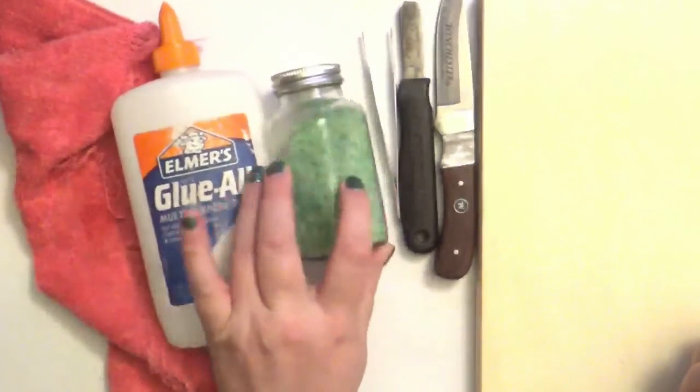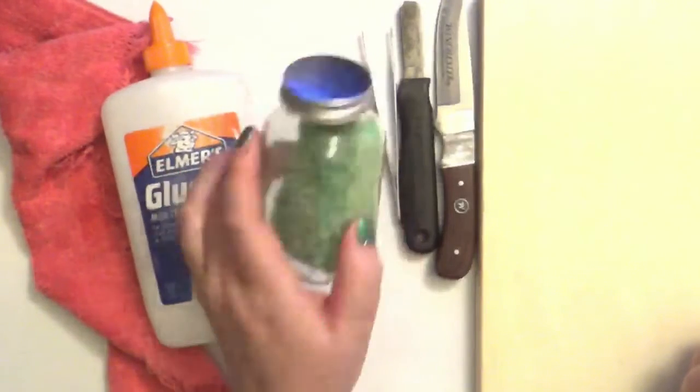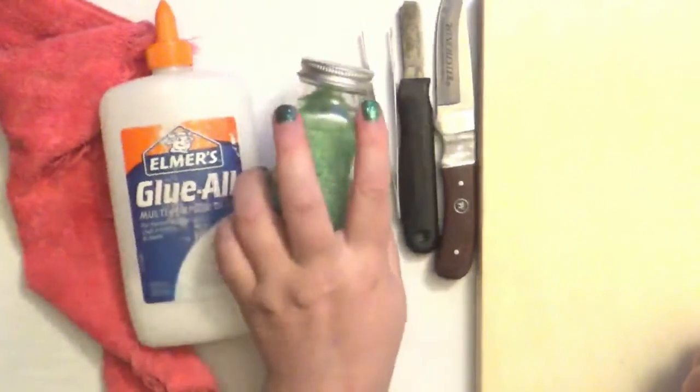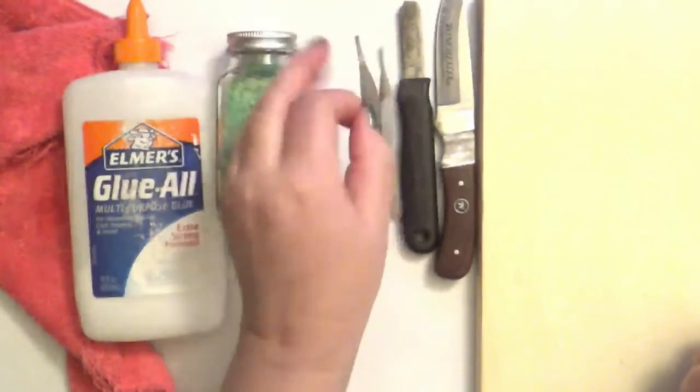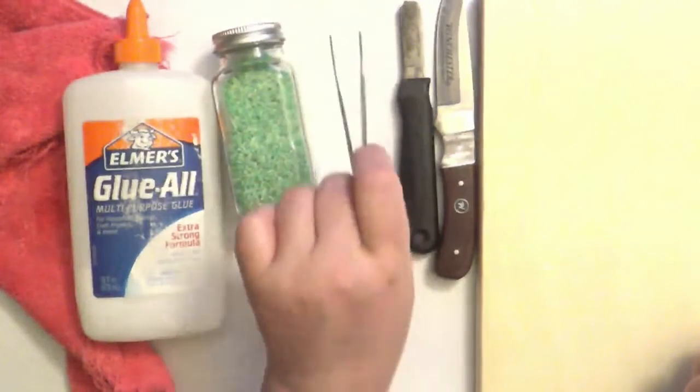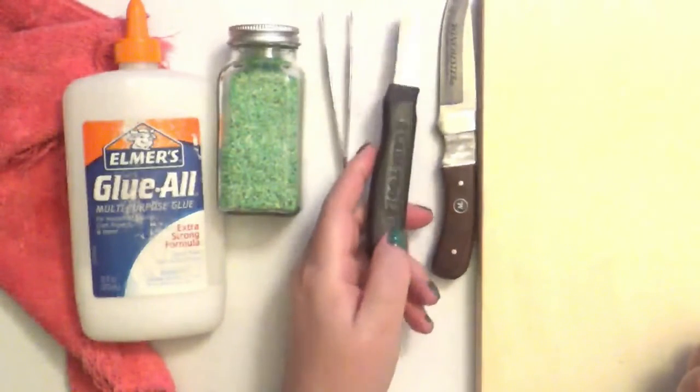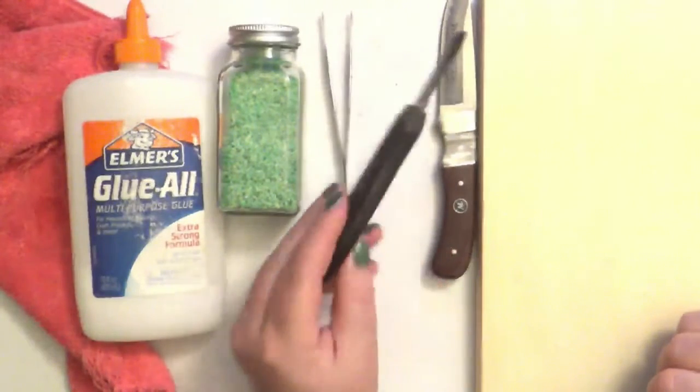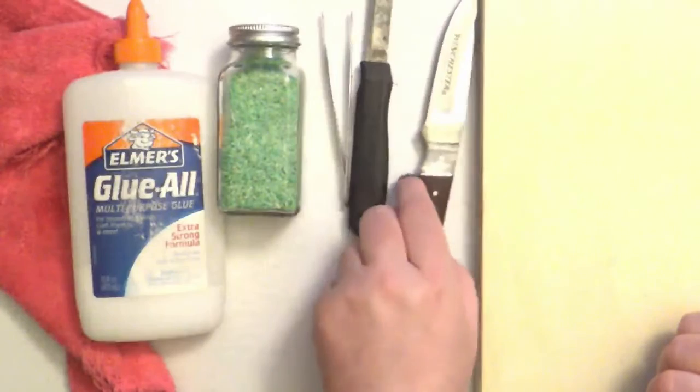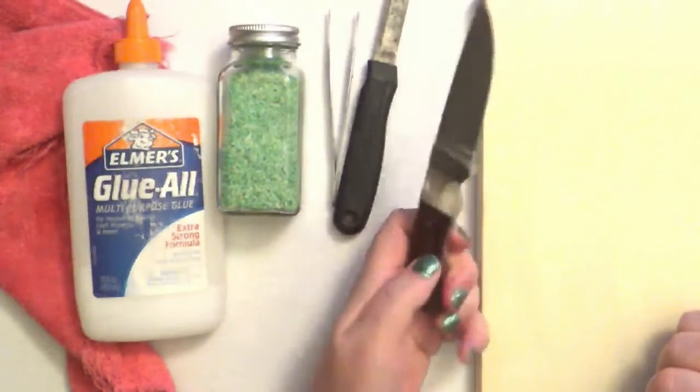You're going to need colored rice, which I have a video of how to color your rice. Tweezers, which you'll see me using a lot in the video. I have a splicer tool by Klein Tools, but you can also use a sharp knife for the same purpose.